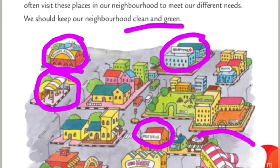Then, supermarket — yeh raha. Supermarket mein bahut saare types ki groceries ke liye hum jaate hai. Fruit ki shopping ke liye, fish, flowers, kapde — sab ki shopping ke liye hum supermarkets mein jaate hai.